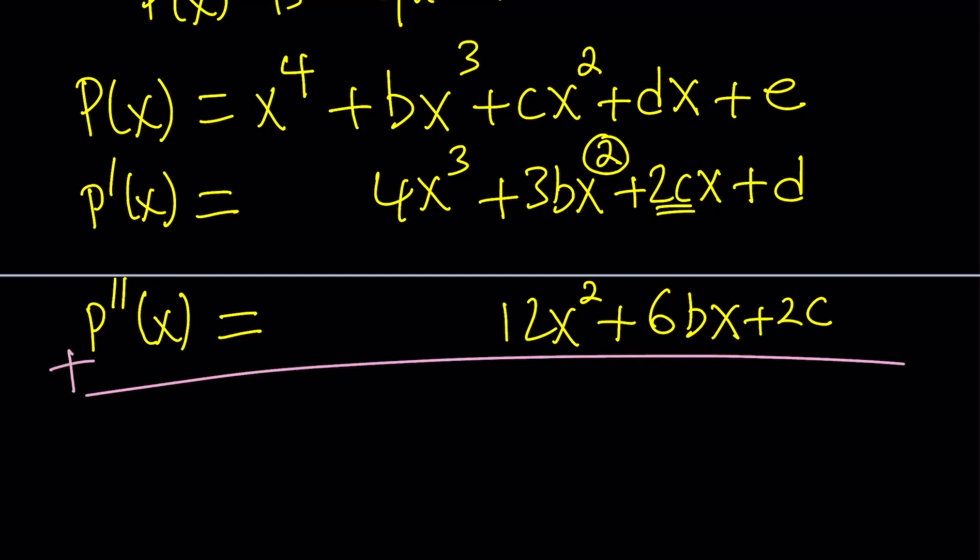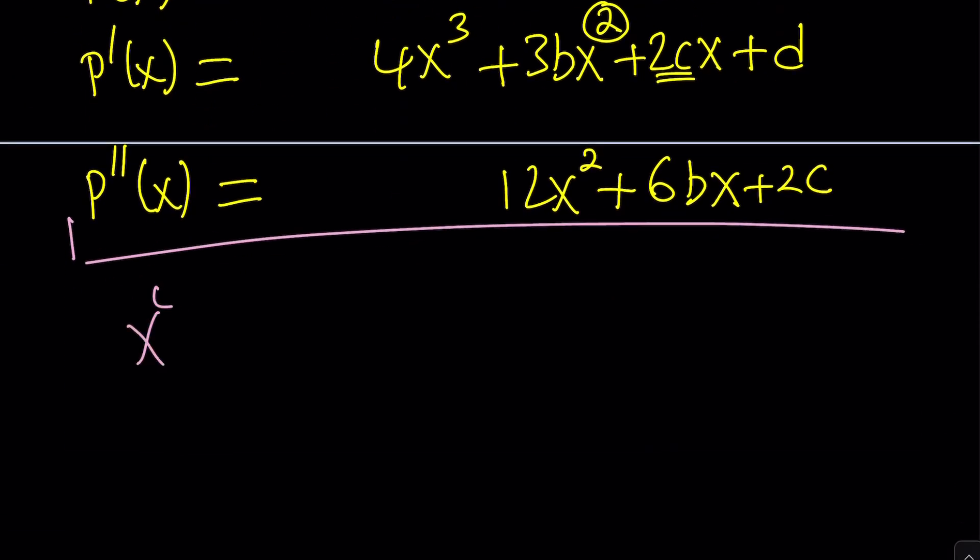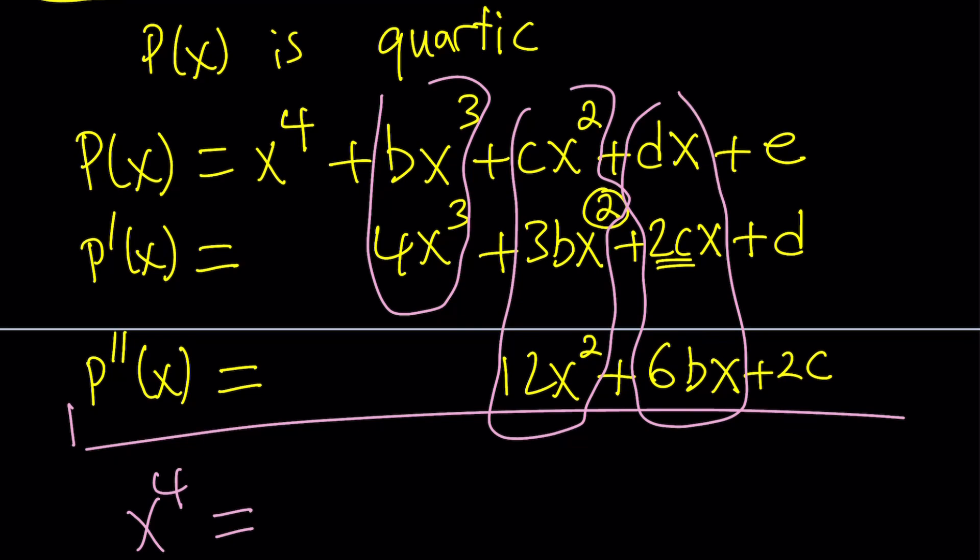Now, when I add P of X, P prime of X and P double prime of X, I'm getting X to the fourth according to the given. So the sum should be X to the fourth on the left hand side. On the right hand side, we're just going to add in columns. That's why I line these up. So now I can add in columns. It's going to be a lot easier. Trust me. Let's go ahead and add these up.